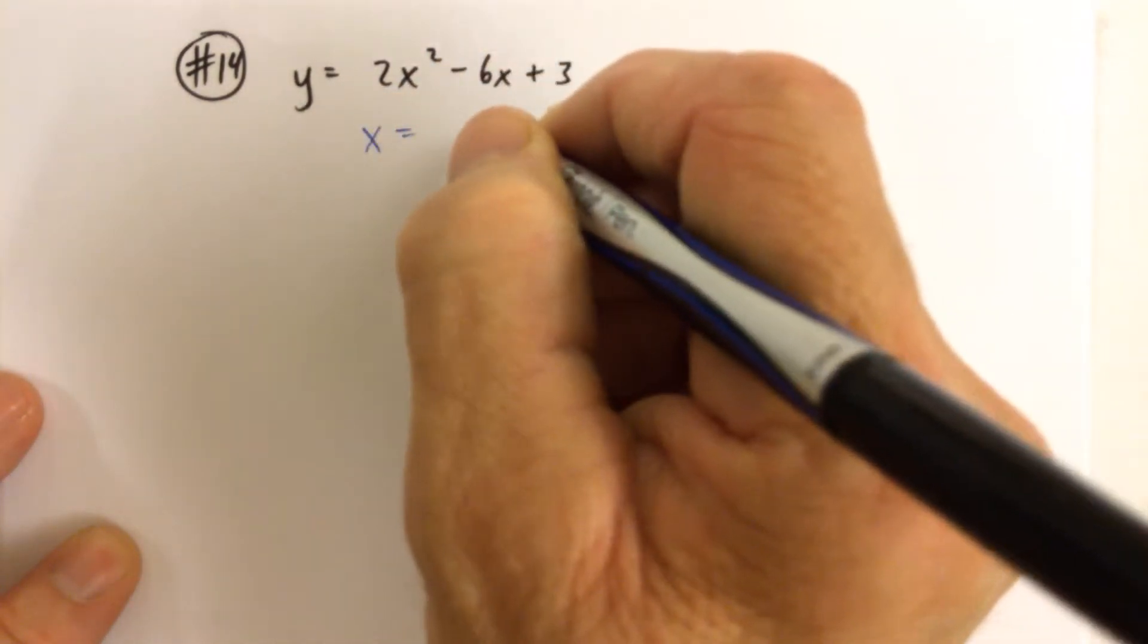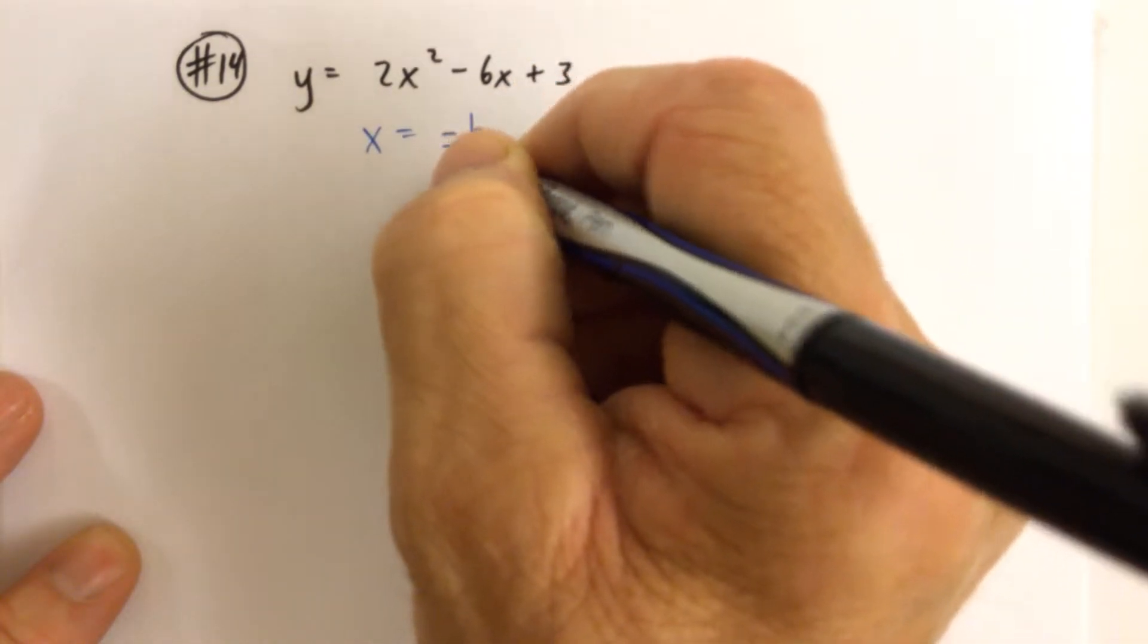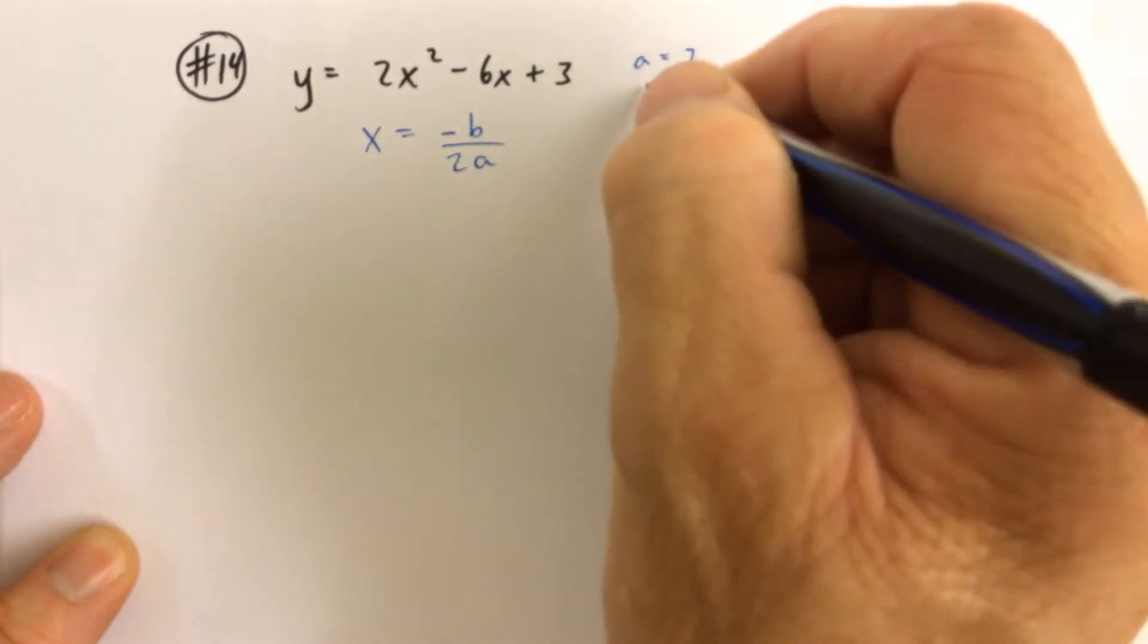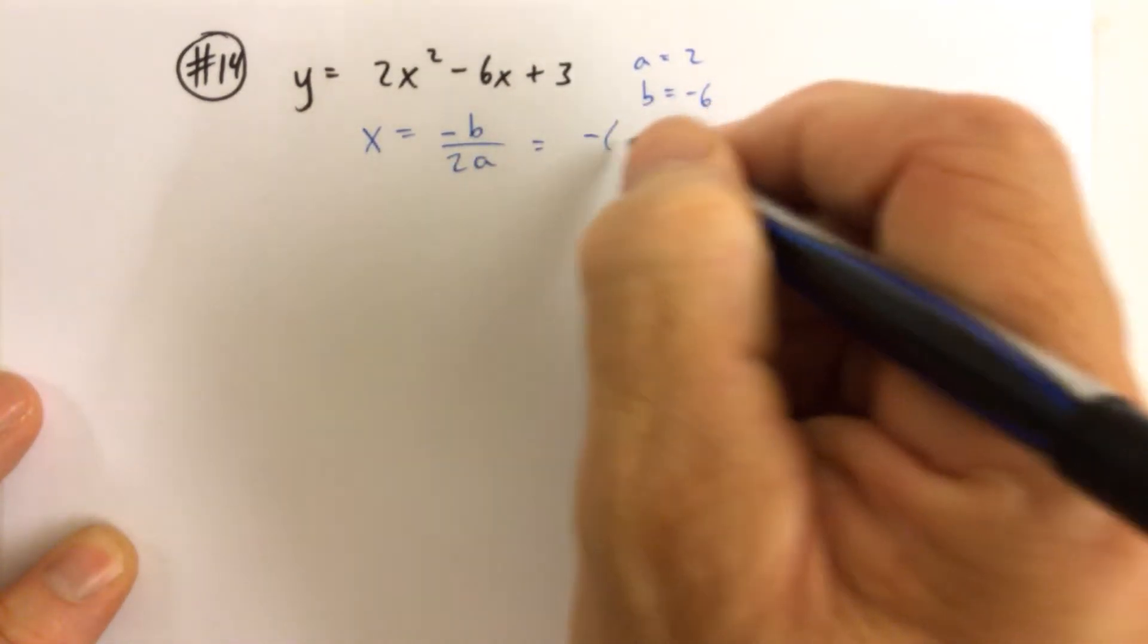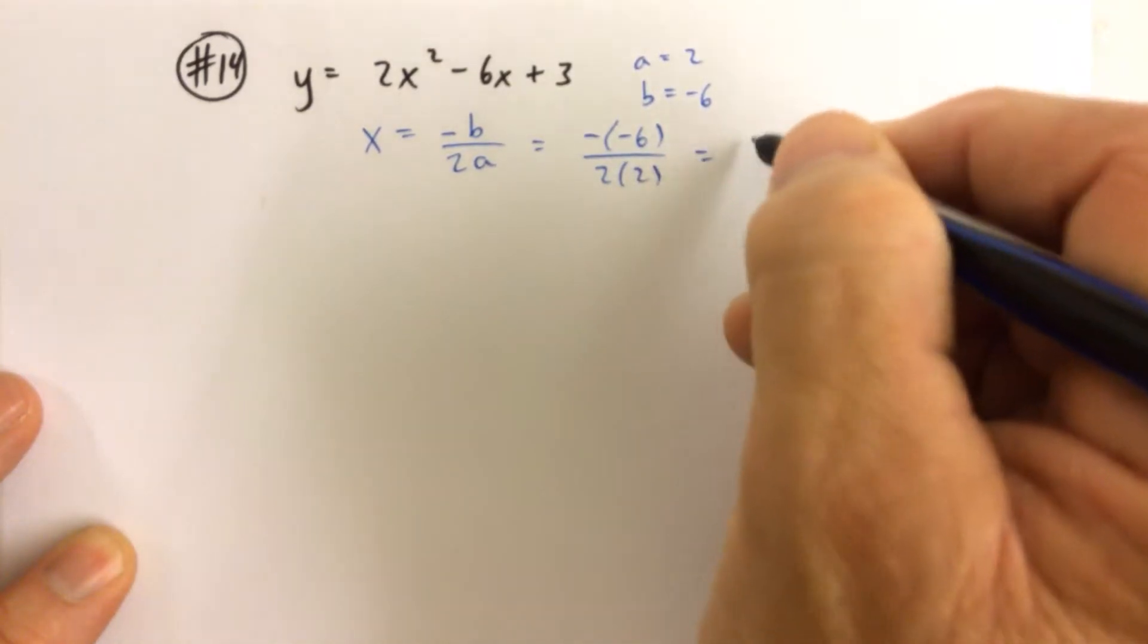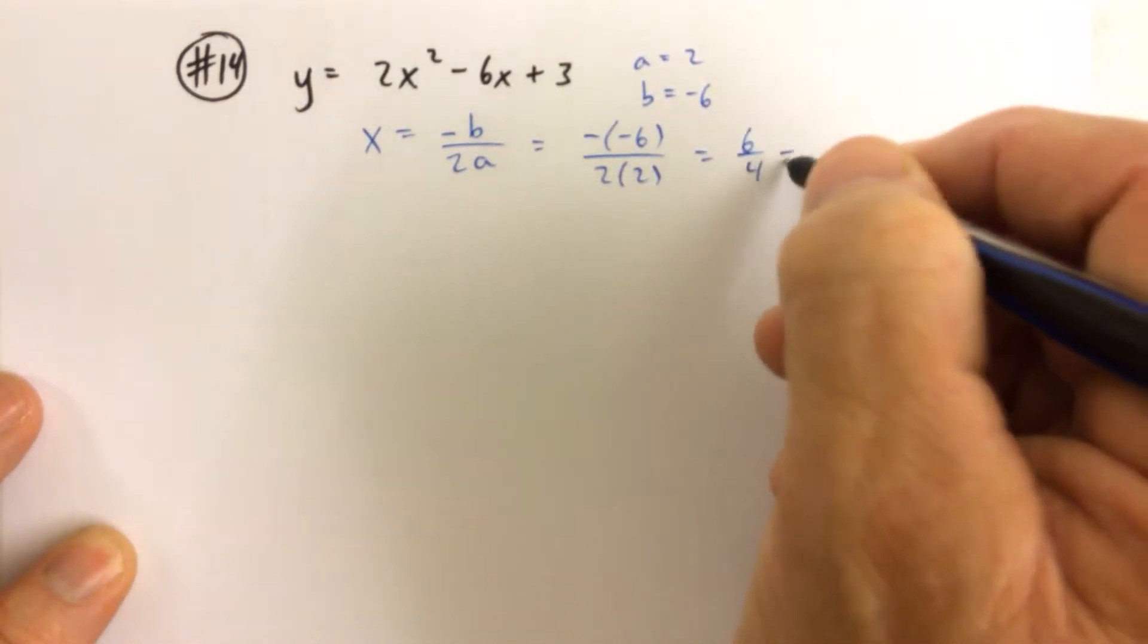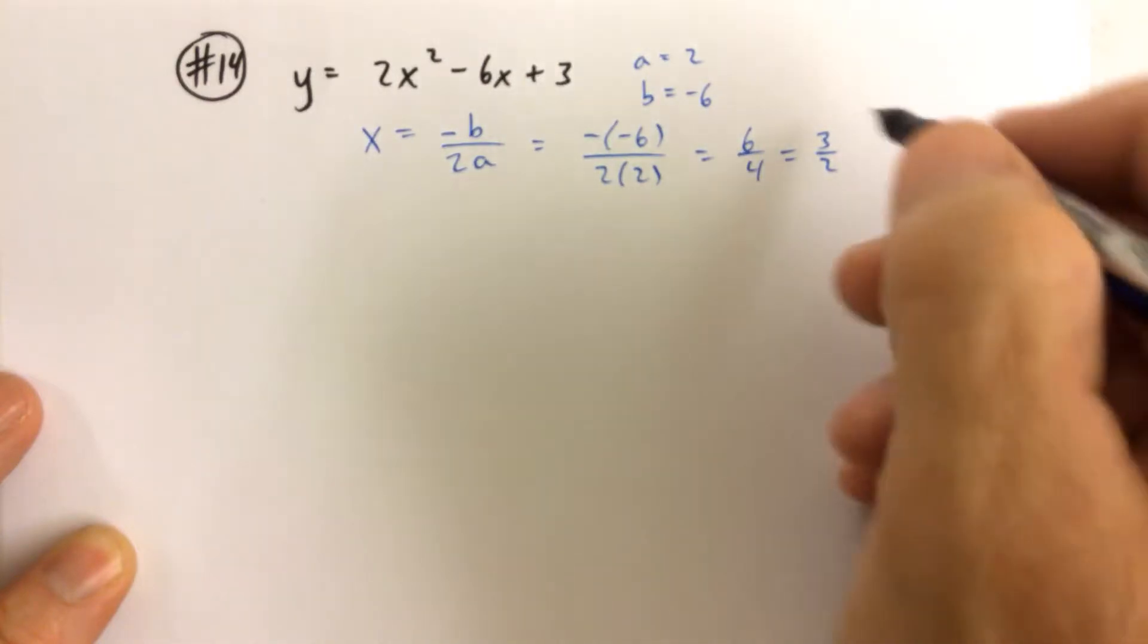For example, if we want to find our axis of symmetry, we're going to find first negative b over 2a, where in this case here, for this parabola, the a is 2 and the b is negative 6. So when we replace b with negative 6 and a with 2, we get negative negative 6. So the opposite of negative 6 is positive 6. 2 times 2 is 4. 6 over 4 can be reduced to 3 halves.